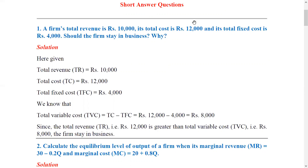The revenue is enough to cover variable cost, so the business is sustained. Should the firm stay in business? Since total revenue, that is Rs. 10,000, is greater than total variable cost, which is Rs. 8,000, the firm stays in business. The firm stays in business until total revenue equals total variable cost — that is the shutdown point.